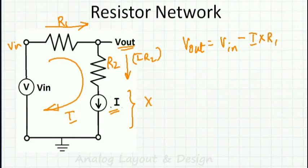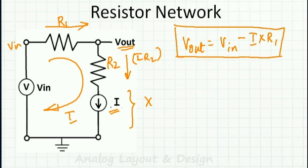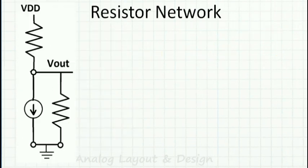What is I? I is given by whatever value the current source provides — it can be 1 milliamp, 2 milliamp, whatever — multiplied by R1. So Vout equals Vin minus I into R1. Now we have a similar voltage divider network with R1 and R2, and we are trying to solve for Vout. Think over and then continue watching.